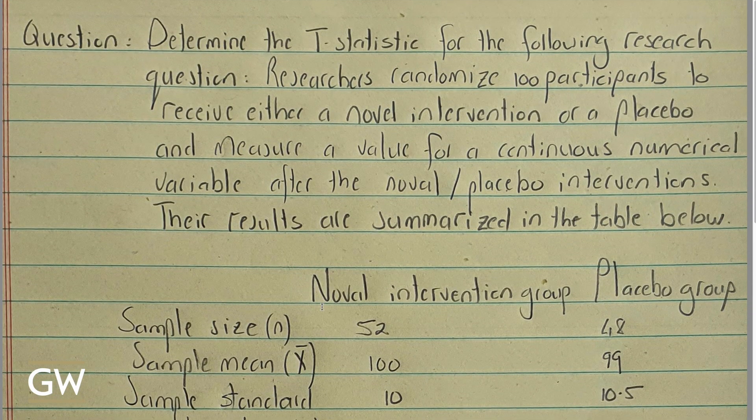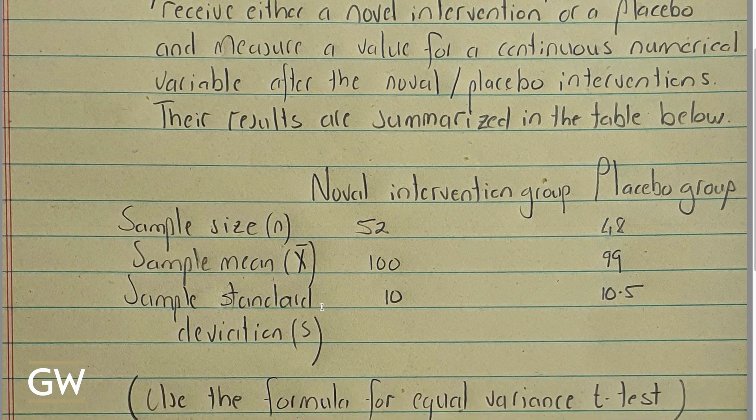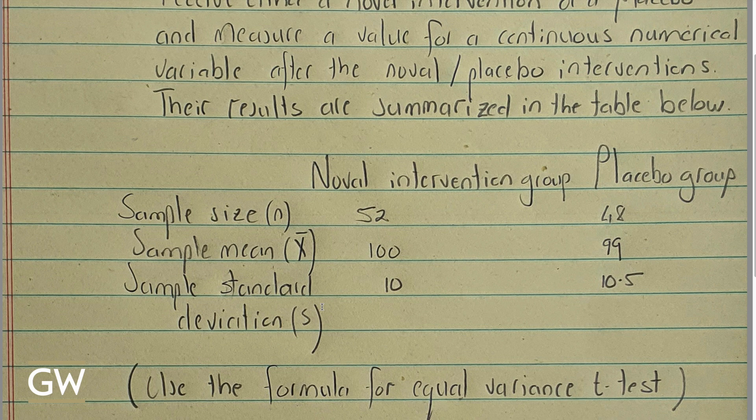The question reads: determine the t-statistic for the following research question. Researchers randomize 100 participants to receive either a novel intervention or a placebo and measure a value for continuous numerical variable after the novel or placebo interventions. Their results are summarized in the table below. We see the novel intervention group and the placebo group, and then three rows of information: sample size n, sample mean X-bar, and sample standard deviation S. We see the results 52, 48, 100, 99, and 10 and 10.5.